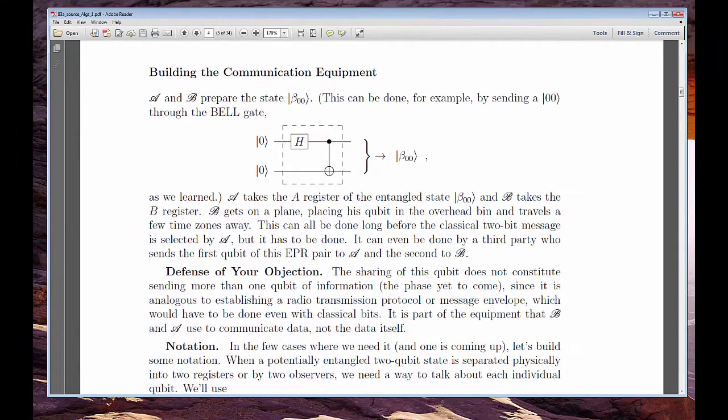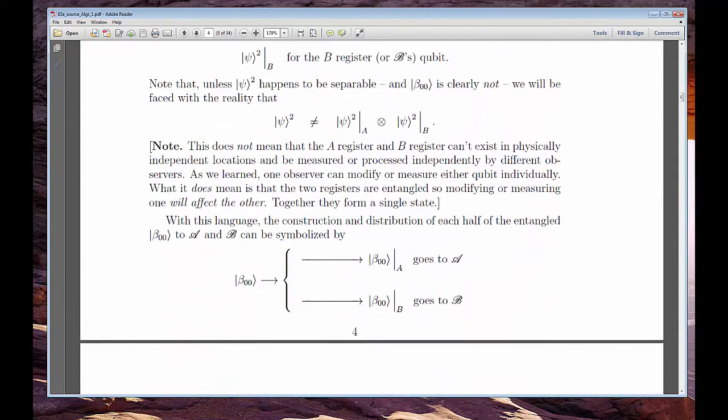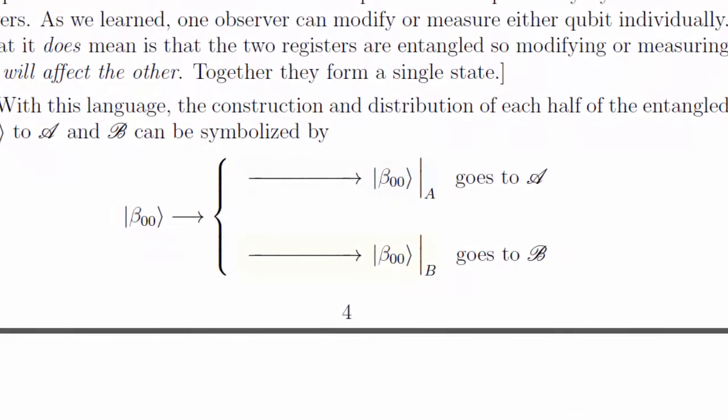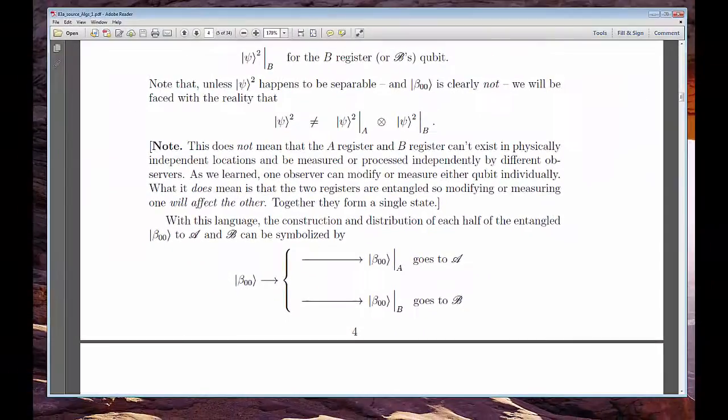Alice and Bob first prepare an Entangled Bell state, and each takes one qubit from that state, thus setting up their communication apparatus. As I'll explain, this preliminary act is perfectly valid and does not violate the goal of sending information in a single qubit, which comes later.